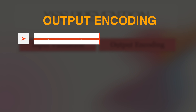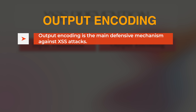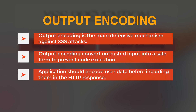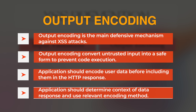Output encoding is the main defensive mechanism against cross-site scripting attacks. The purpose of output encoding is to convert untrusted data into a safe form, ensuring it is treated as data and not as an active element of HTML or JavaScript context, therefore preventing code execution in the user's web browser. When implementing output encoding, the application should encode user data before including it in the HTTP response, determining the context and using the relevant encoding method — including HTML, JavaScript, and CSS encoding.